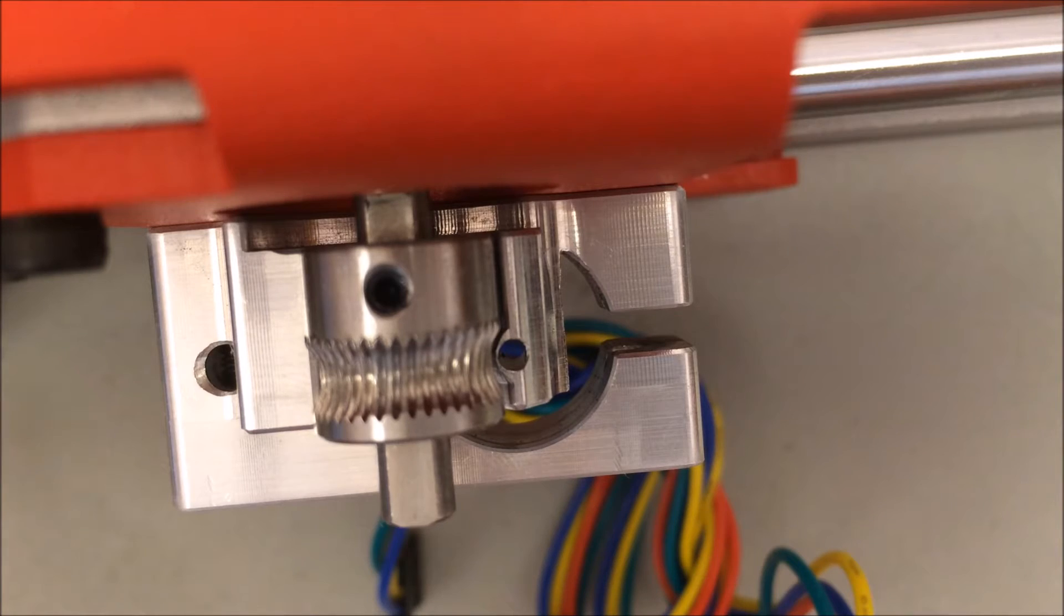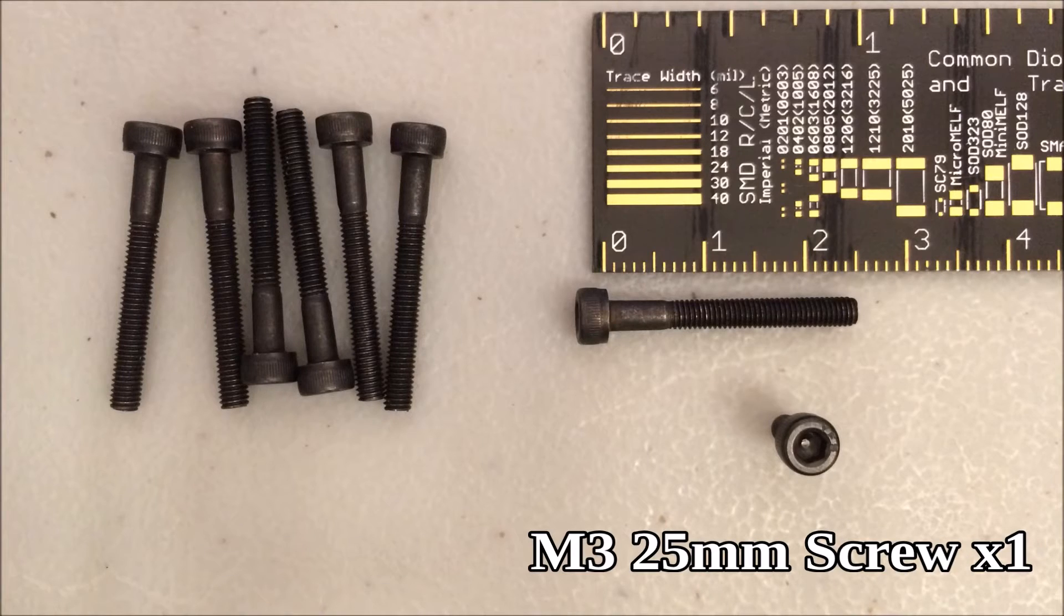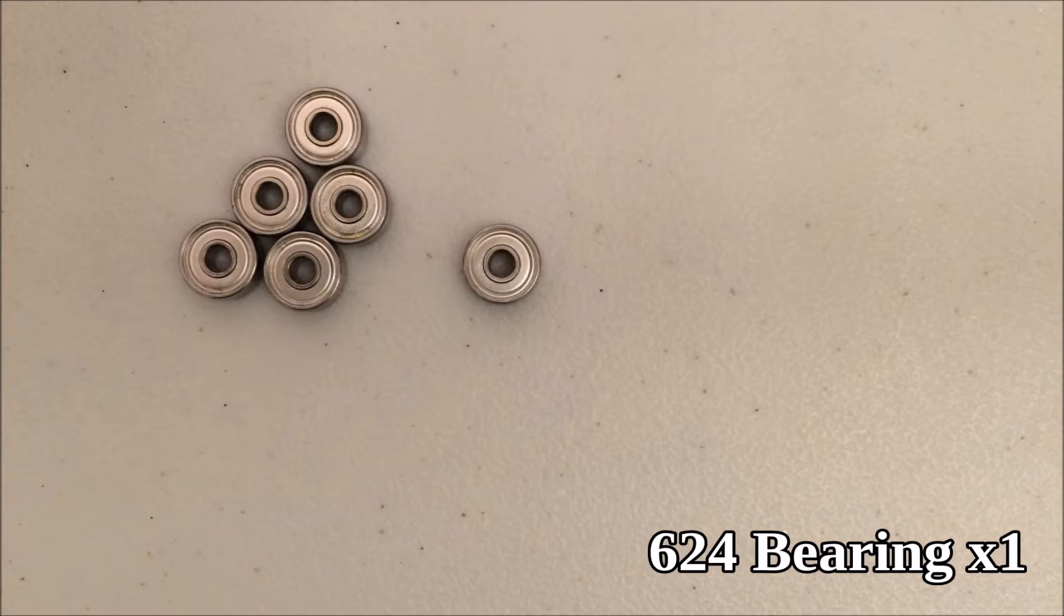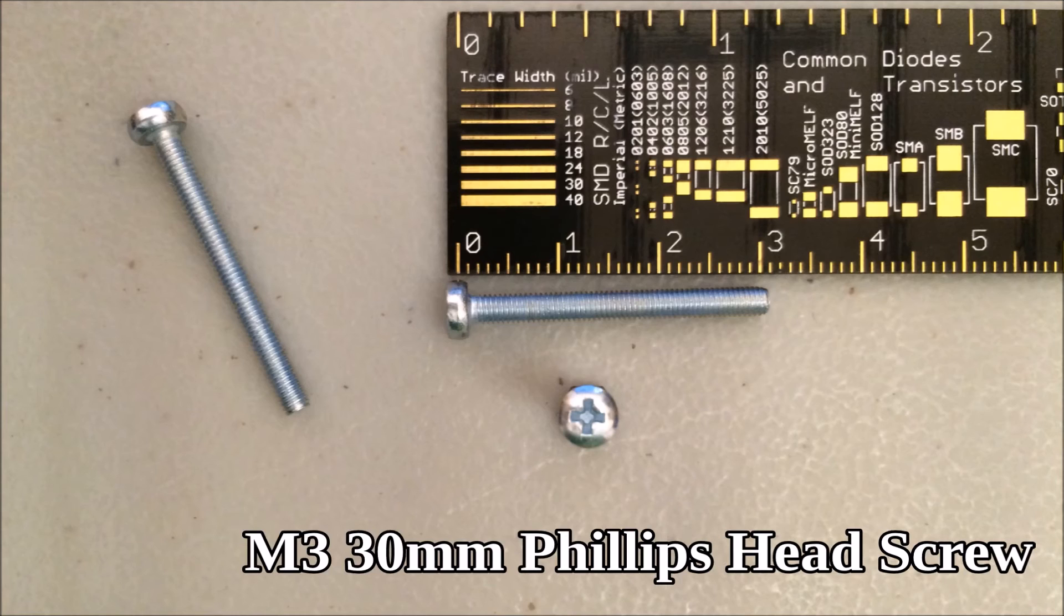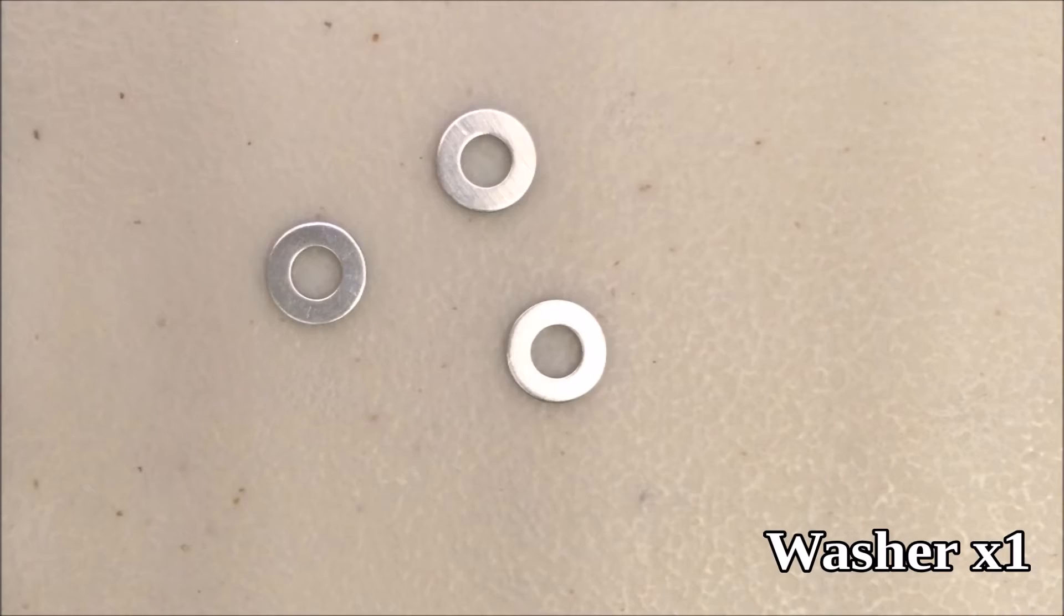You need the top half of the extruder and the plastic spacer, one M3 25mm screw, one M4 12mm screw, one of the 624 bearings, one M3 30mm Phillips head screw, one spring, one hex nut, and one washer.